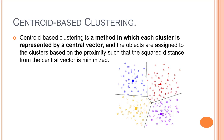The last type is centroid-based clustering, which is what we will focus on most. It organizes data into non-hierarchical clusters. The key algorithm here is K-Means clustering. You assign a number of clusters, and the algorithm groups points based on their proximity to centroids. Centroid-based algorithms are very efficient, but they are sensitive to initial conditions and outliers — outliers can pull centroids and produce incorrect clusters.